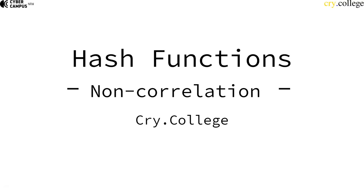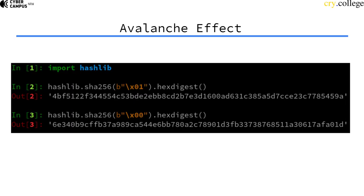Another property a good cryptographic hash function has to have is the non-correlation property. This means there is a so-called avalanche effect: if I change only one bit or make a tiny modification to the input of the hash function, the output should look completely different. This is important because you don't want to be able to correlate input and output in some way.